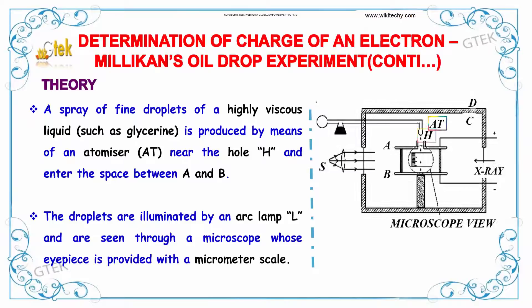The basic theory behind Millikan's oil drop experiment is: a spray of fine droplets of a high viscous liquid such as glycerin is produced by means of an atomizer near the hole H and enters between the space A and B. The droplets are illuminated by an arc-lamp L and are seen through a microscope whose eyepiece is provided with a micrometer scale.